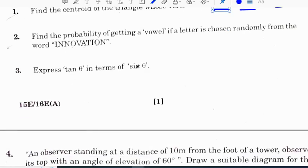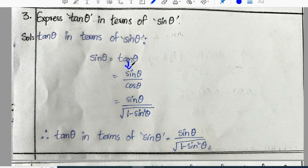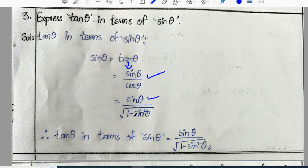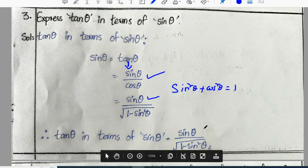Third question: express tan θ in terms of sin θ. We know the formula tan θ = sin θ / cos θ. This can be expressed as sin θ / √(1 - sin²θ) because sin²θ + cos²θ = 1 based on identity 1. It is expressed as sin θ / √(1 - sin²θ).